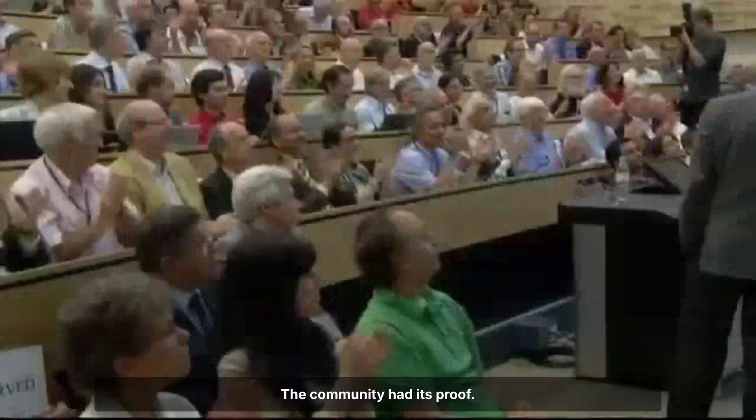The community had its proof. Decoherence was not a philosophical idea, but a measurable, calculable, and now experimentally verified fact.